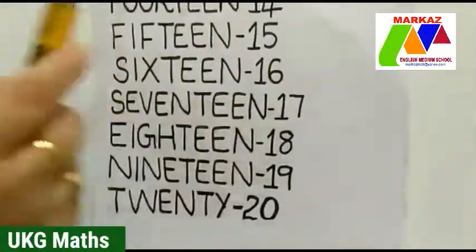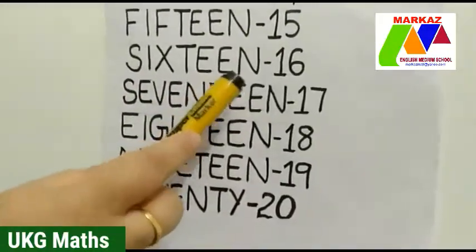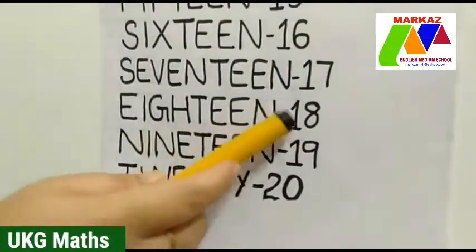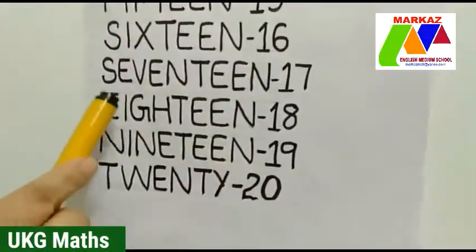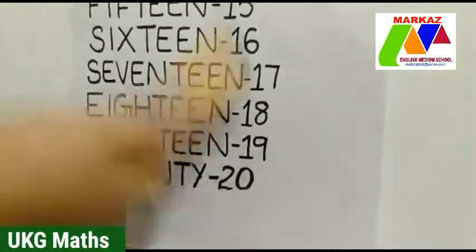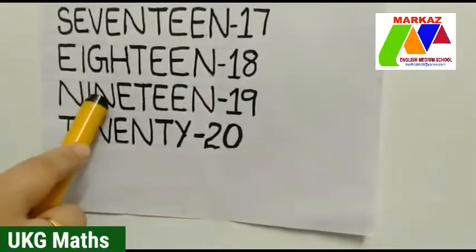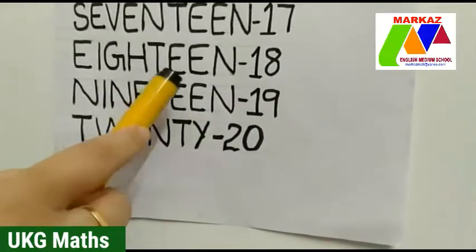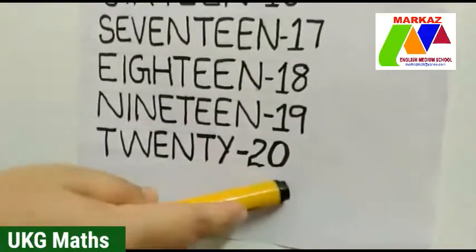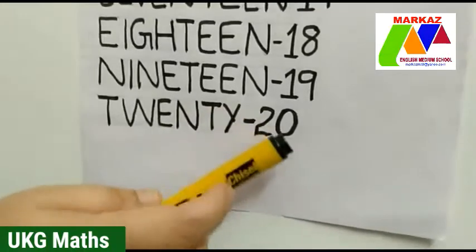Next number 17 — S-E-V-E-N-T-E-E-N. Next number 18 — E-I-G-H-T-E-E-N. Next number 19 — N-I-N-E-T-E-E-N. Last number 20 — T-W-E-N-T-Y.